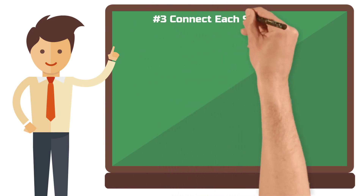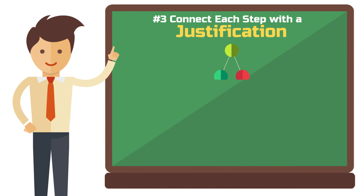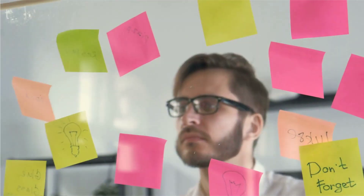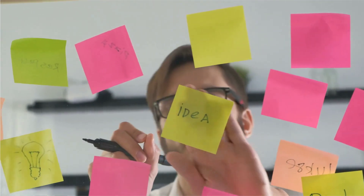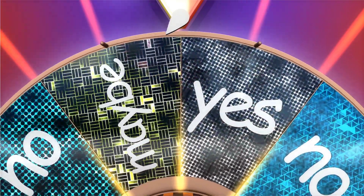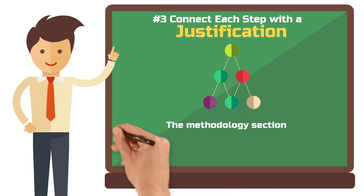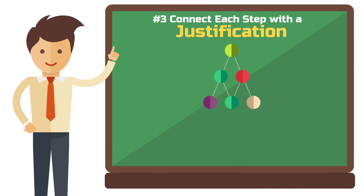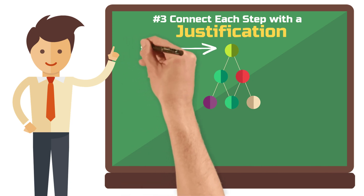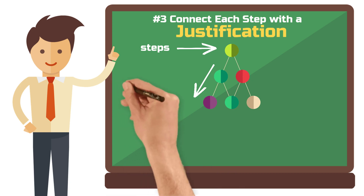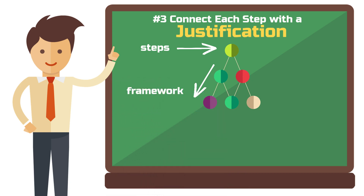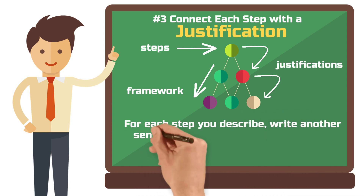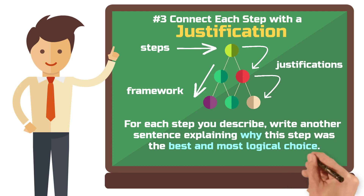Principle three: connect each step with a justification. Even if you follow a framework meticulously, you may sometimes encounter unplanned changes, dilemmas, or too many options. In such cases you need to make tough decisions. The methodology section is not only a description of your research design, but also a continuous justification of your choices. You should explain each step sequentially and ideally refer to a scientifically recognized framework. Ensure that you logically link the individual steps with justifications. For each step you describe, write another sentence explaining why this step was the best and most logical choice.